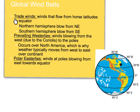The first global wind belt we're going to go over is the trade winds. They go from the horse latitudes — 30 degrees north or 30 degrees south — to the equator. They are named by the direction from which they come. The northeast trade winds come from the northeast down towards the equator, and the southeast trade winds come from the southeast down towards the equator. You can see how they both converge at the equator.